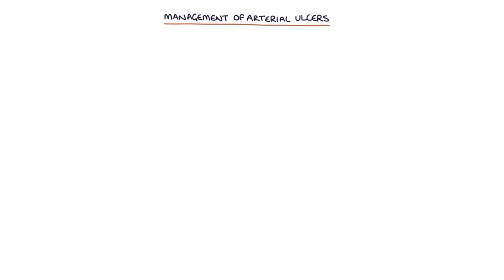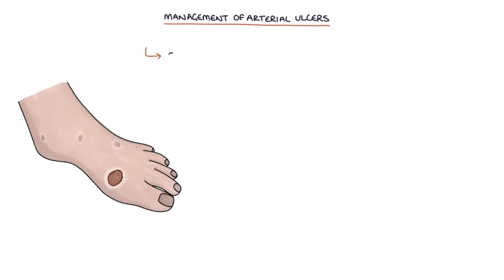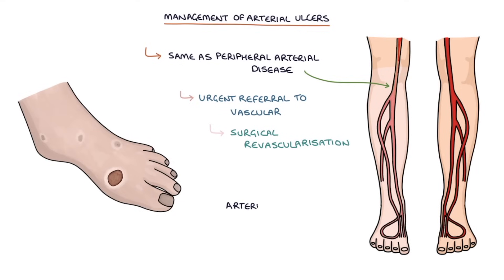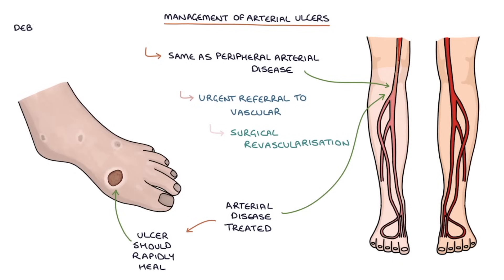The management of arterial ulcers is the same as for peripheral arterial disease, with an urgent referral to vascular surgery to consider surgical revascularization. If the underlying arterial disease is effectively treated, the ulcer should rapidly heal. Debridement and compression are not used to treat arterial ulcers — they are essentially treated by treating the underlying peripheral arterial disease.